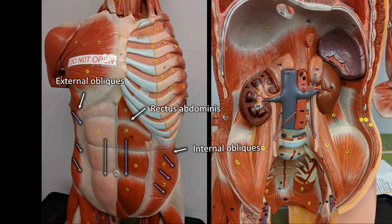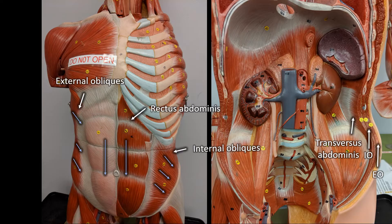On the open torso model you can see the different layers of the abdominal muscles: the external obliques, internal obliques, and then the deepest layer, a muscle called the transversus abdominis. Because its muscle fibers run side to side, it doesn't cause flexion of the spine — it only causes compression of the abdominal contents, because it wraps around the whole torso like a belt. When it tightens, it compresses the abdomen.